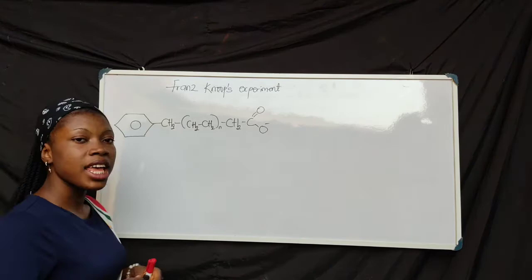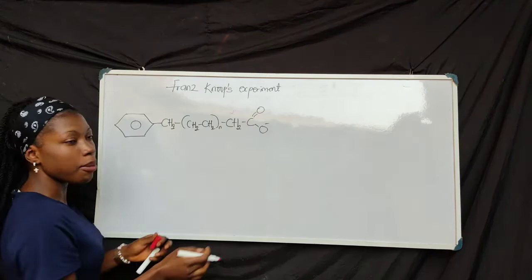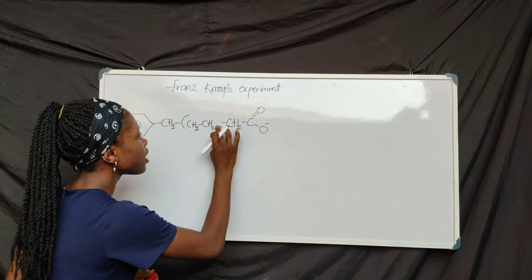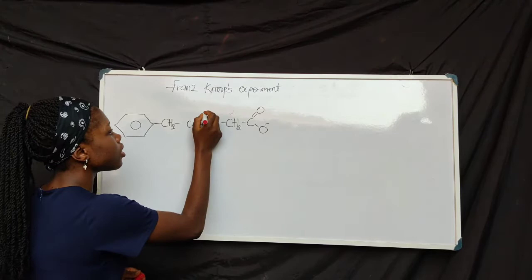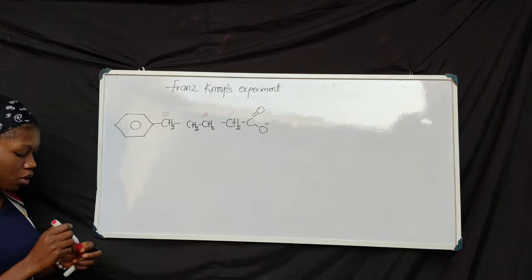Now, remember in the fatty acid, this is the alpha-carbon. Let's assume this to be one. This becomes the beta-carbon, and this is the omega-carbon.